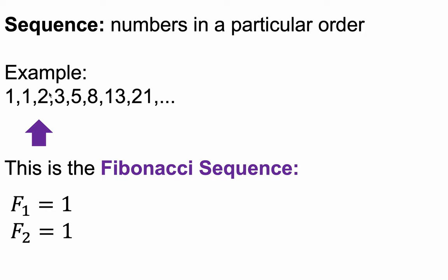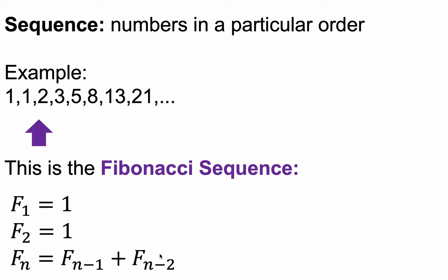So if I want, for example, to find the third step, I add the one step before it and the two steps before it together — 1 plus 1 is 2. If I want the fourth step, I have to add the third step and the second step, and so on and so forth. So if I want the nth step — any particular step — I have to add the (n−1)th step plus the (n−2)th step. And that's written here.